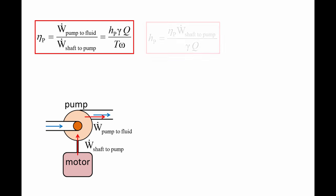The power transferred through the shaft to the pump is equal to the shaft torque, T, times the shaft's angular speed, omega. This equation can be rearranged to form the following relationship: the pump head is equal to the pump efficiency times the power transferred through the shaft to the pump, divided by gamma Q.